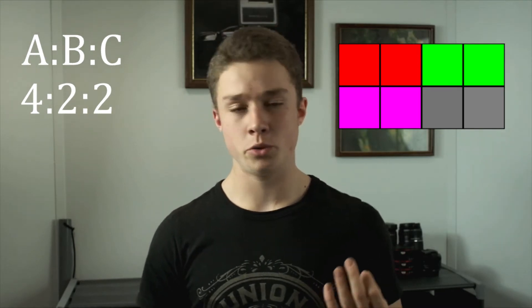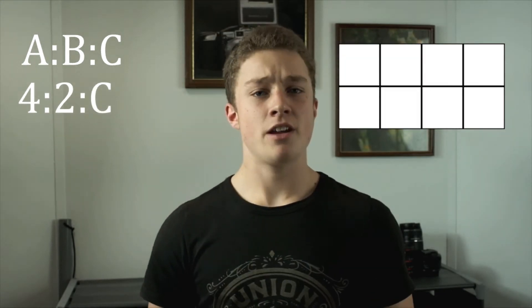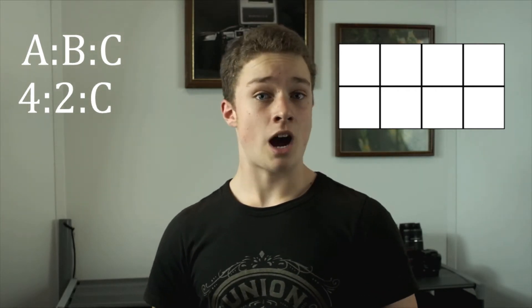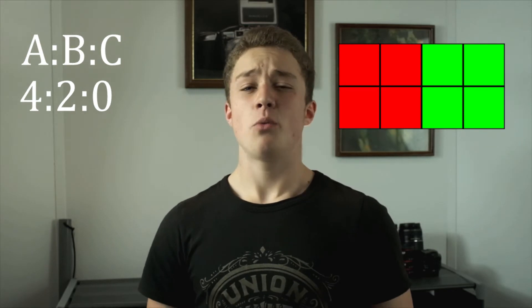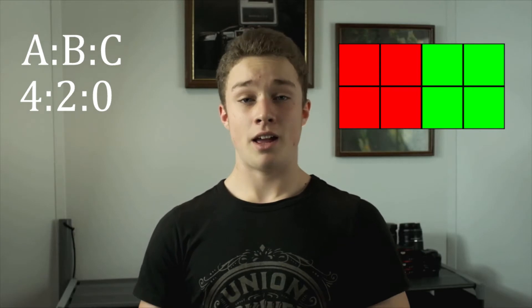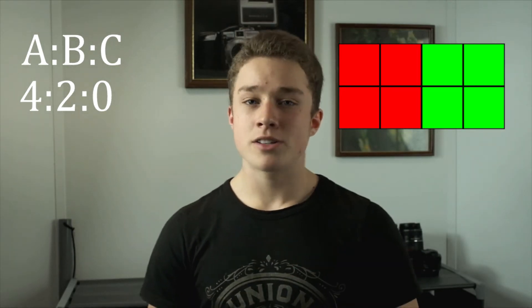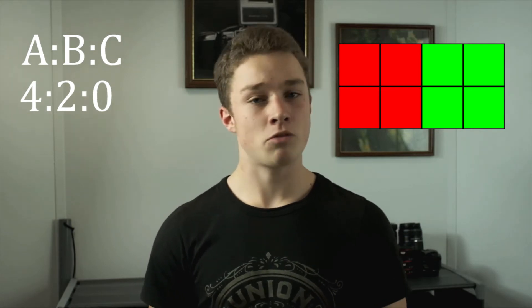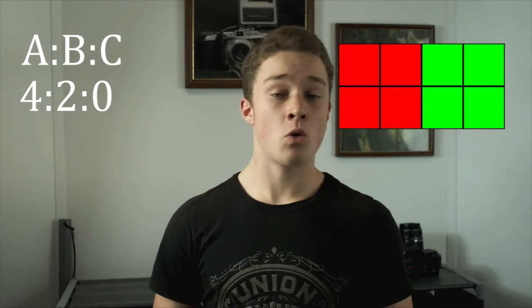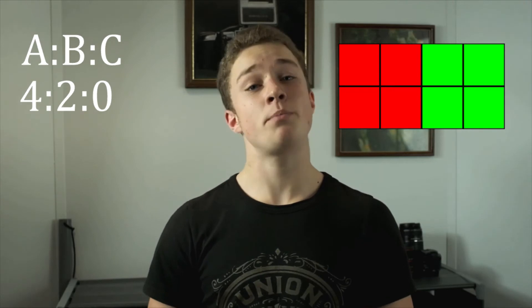Now to 4-2-0. Same reference area — the 4 by 2 — and the same 2 pixels are different on the top row. But now you have a 0, which means none of the pixels on the bottom row of your reference area can be different from the top. So you end up with these squares of the same colored pixels instead of small rectangles or just single pixels. In 4-2-0 or 4-2-2 video, where you have certain pixels that are the same color, they do not have to be the same shade — one can be darker or lighter — but the color must stay the same.